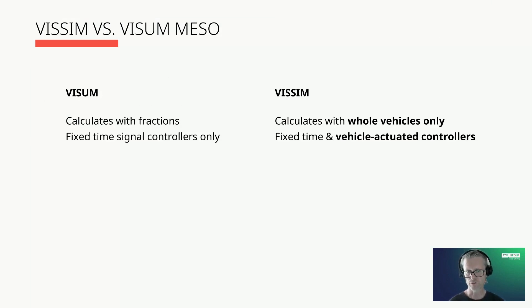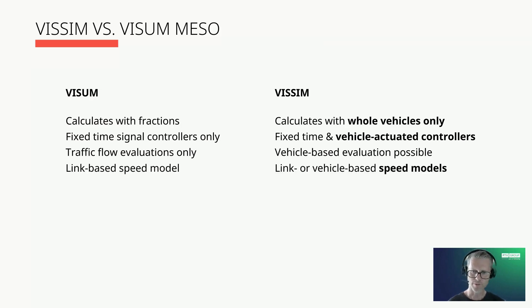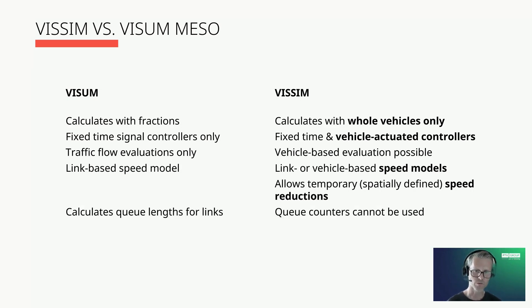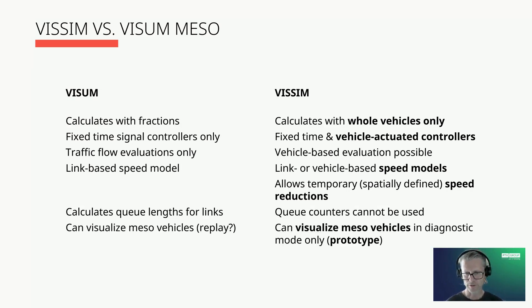VISSIM allows vehicle-activated signal control, so detectors can be used and dynamic control can be utilized. VISSIM can do vehicle-based evaluations. VISUM uses link speed. VISSIM offers two speed models, one of them is vehicle-based and allows temporarily spatially defined speed reductions. Regarding visualizations, VISUM calculates the queue lengths for links; VISSIM does not work with queue counters in meso. Regarding the visualization, VISUM can visualize replayed trajectories in a simplified way. VISSIM by default does not visualize vehicles but can do that during the simulation in the diagnostic mode. Both software can do hybrid models but not the same way—VISUM can do micro background with meso sections, and VISSIM can do meso background with micro sections.